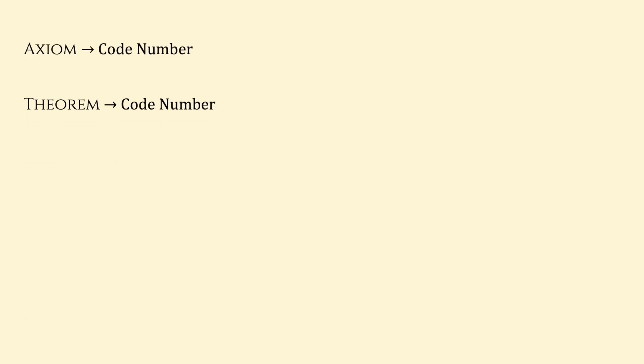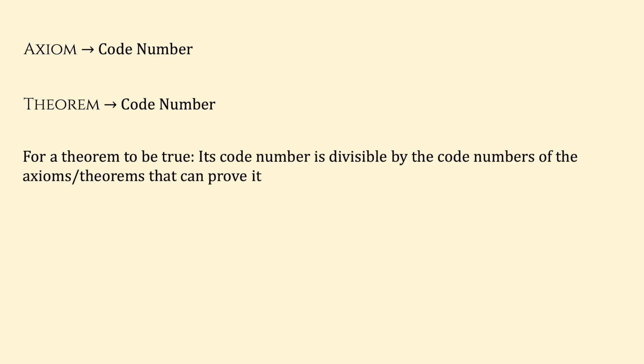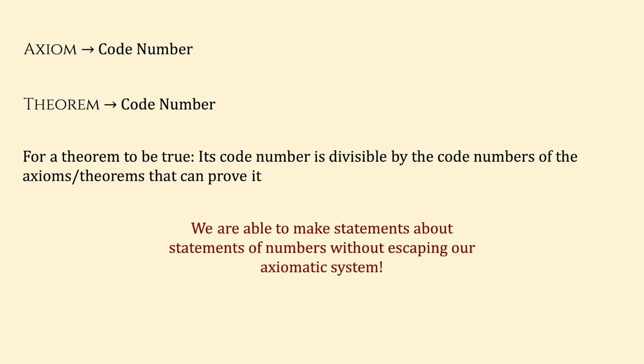Now, in number theory, we want to be able to use meta-language without escaping our current system. But how can we do that? This is where mathematician Kurt Gödel created an axiomatic system, took each axiom and theorem, and gave it a code number. He stated that for a theorem to be true, its code number had to be divisible by those of the axioms or theorems that could prove it. Even though he was making mathematical statements about numbers, he was essentially making statements about axioms and theorems — able to make statements about statements without escaping the axiomatic system.